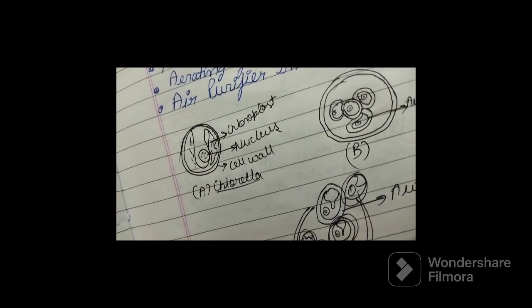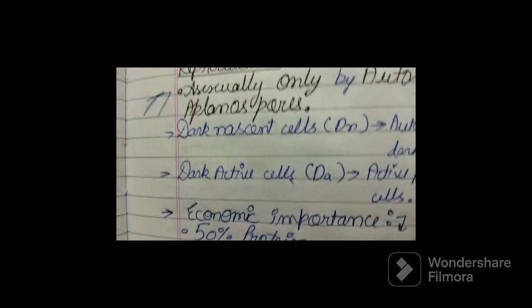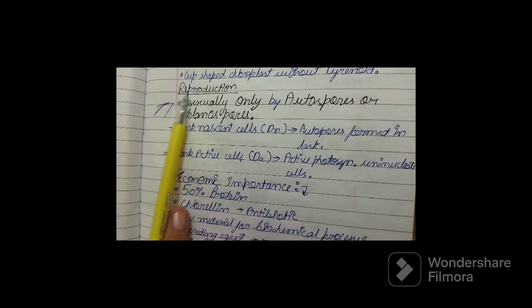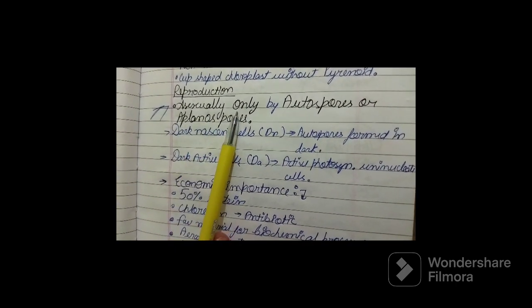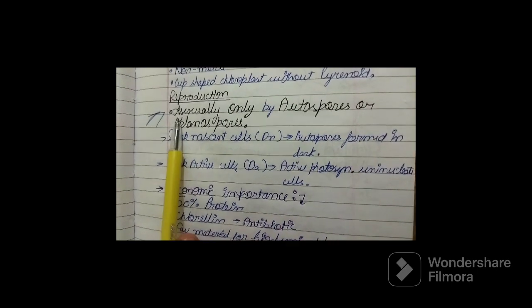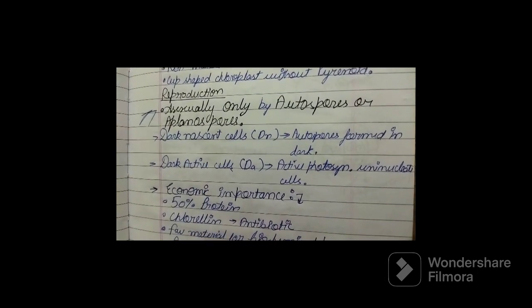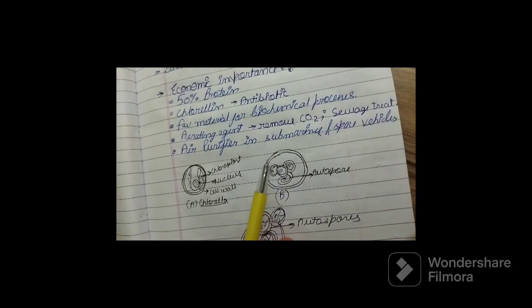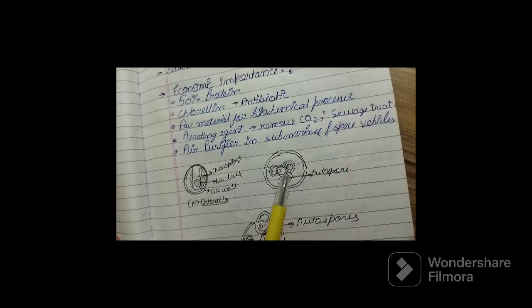We will talk about the reproduction. So talking about the reproduction, it is asexual reproduction only, and this is by autospores which are also called aplanospores. Here you can see, these are your autospores.